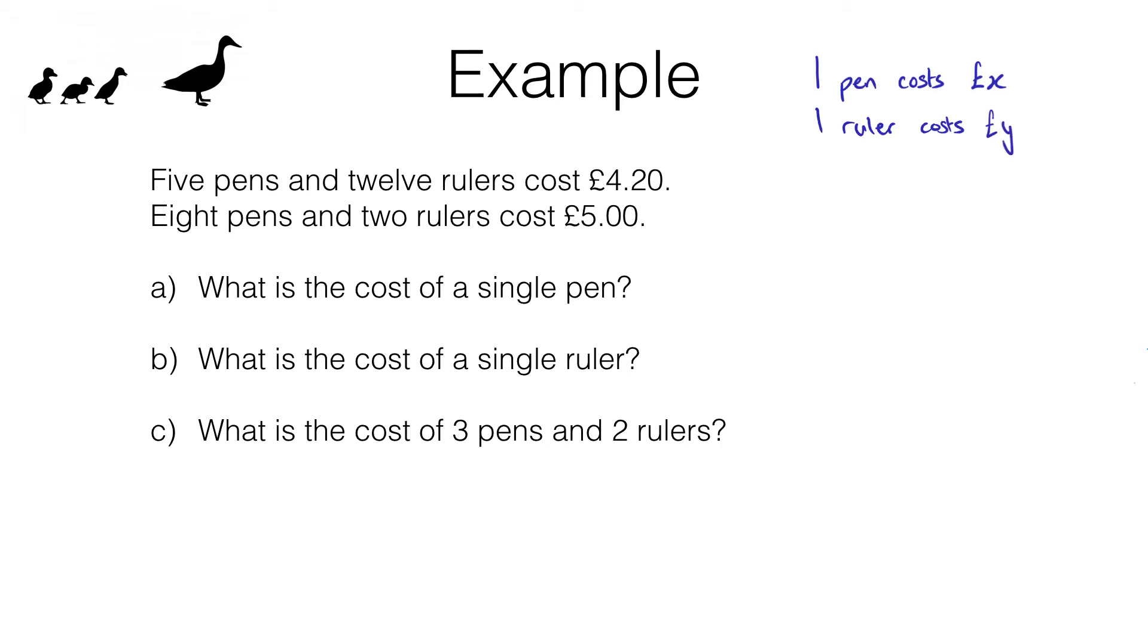Now what I can do is turn these sentences into equations. If one pen costs x pounds, five pens is going to cost five lots of that which is 5x pounds. Now I'm just going to leave out the pound sign from now on just to make life easier. 12 rulers is going to cost 12 lots of y pounds so that's 12y, and the cost of those put together is 5x plus 12y and we know that that must be £4.20.